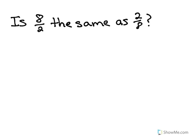Let's review what the commutative property for multiplication is. It says that 3 times 4 is the same as 4 times 3. We know that 3 times 4 is 12, and 4 times 3 is also 12. So it works for multiplication.